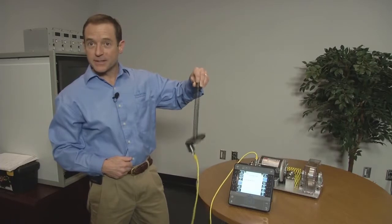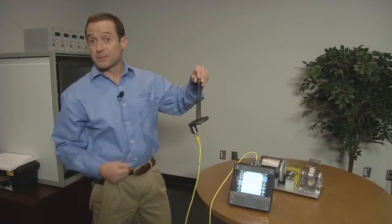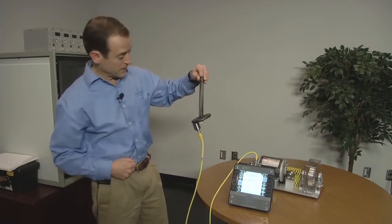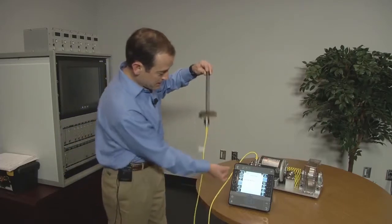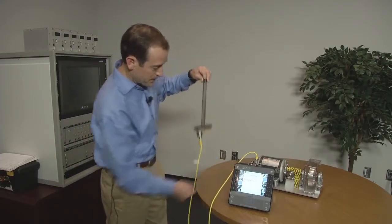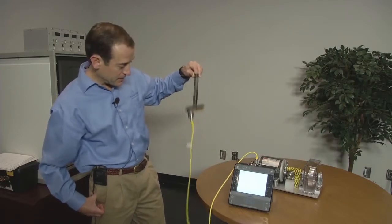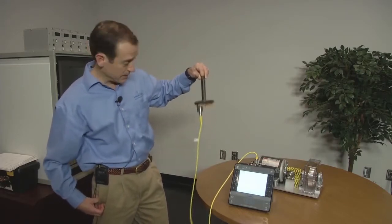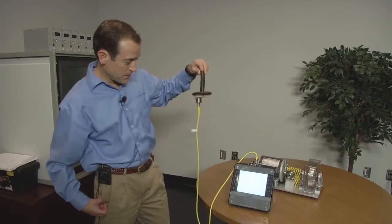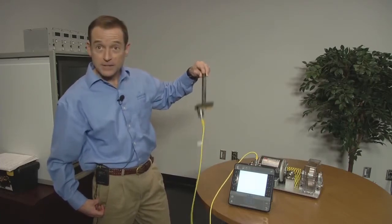And what I want to demonstrate is the difference between types of vibration signals. So I'm going to oscillate the mass. I'm going to select the Enter button. The 2140 is automatically collecting different types of vibration readings. You can see the Peak View, the Acceleration, and the Velocity.